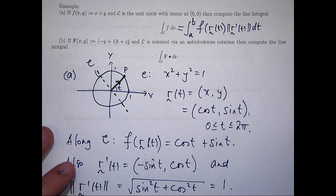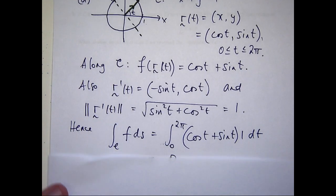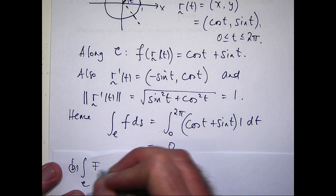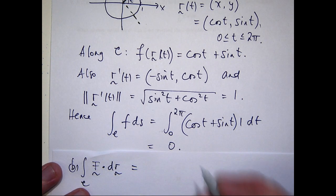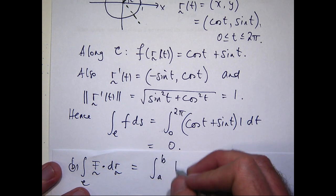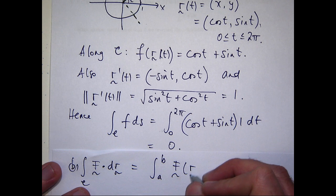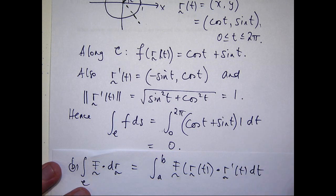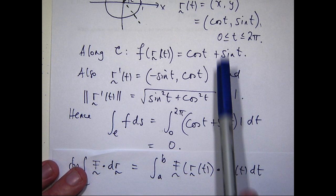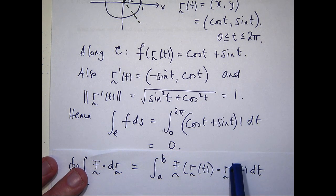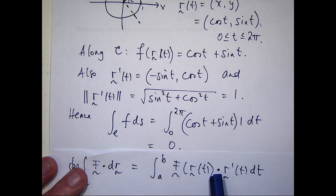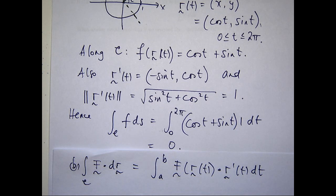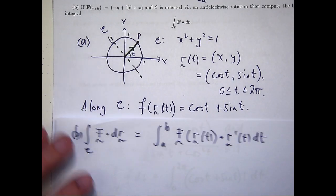And we're asked to compute this line integral. Well, what does this line integral mean? Essentially, from a computational point of view, it's similar to part A. But, remember, this is a vector. And so, instead of multiplying through by the magnitude of this derivative, what we do is we have this dot product here or scalar product.